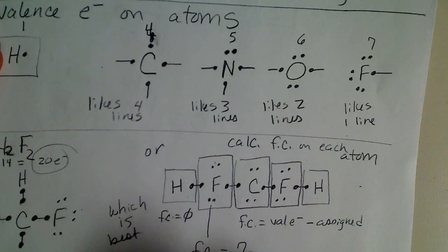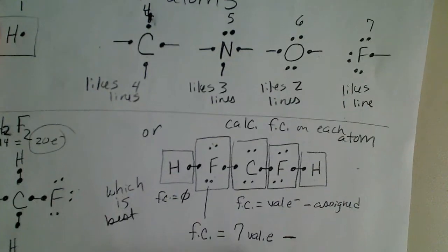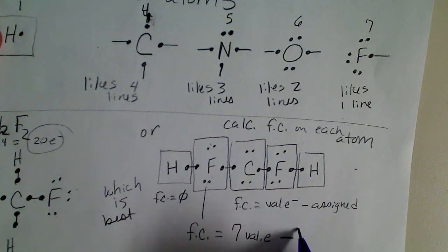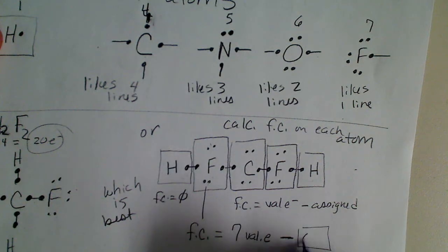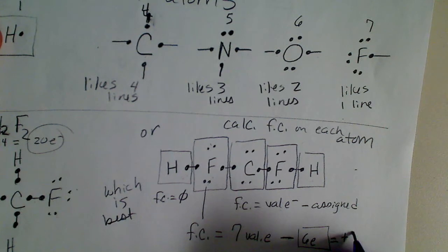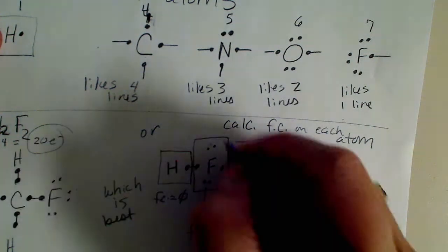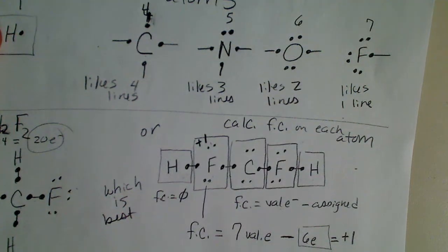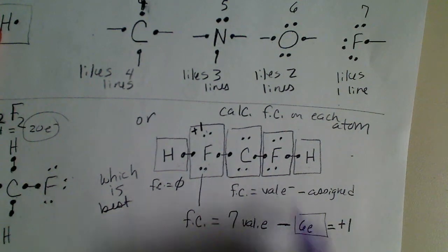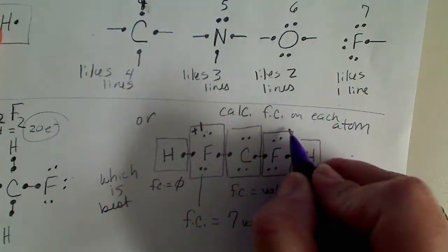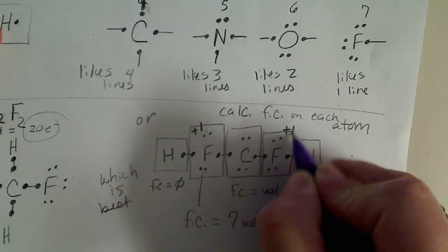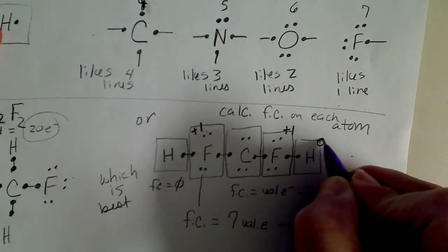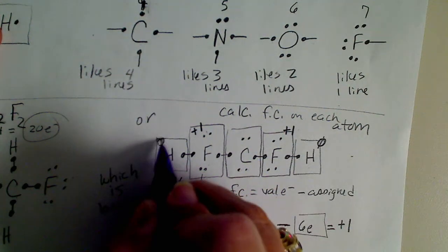For the formal charge on fluorine in the long stringy structure: fluorine has seven valence electrons from the periodic table. Subtracting the assigned electrons — two, four, five, six — we come up with a formal charge of plus one for fluorine. Fluorine definitely does not want to be a plus one. The other fluorine is in the same environment, so it would also be plus one, and hydrogen remains zero.